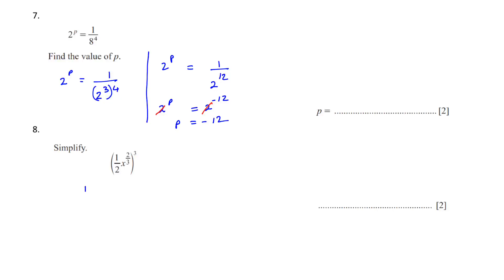Question 8: simplify. We write one half to the power of 3 and x squared to the power of 3. Putting one half to the power of 3 in the calculator gives 1 over 8, and the powers on x multiply to give x to the power of 6 — wait, the powers cancel to give x to the power of 2. So the answer is x squared over 8.